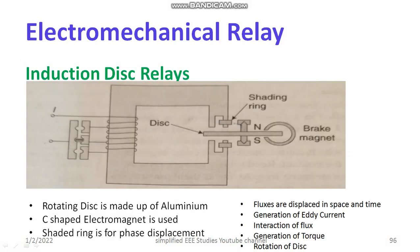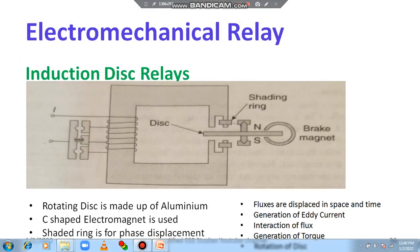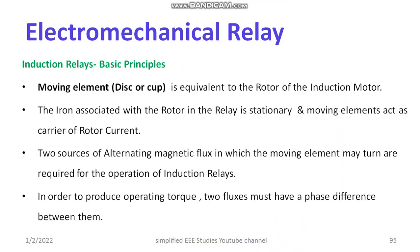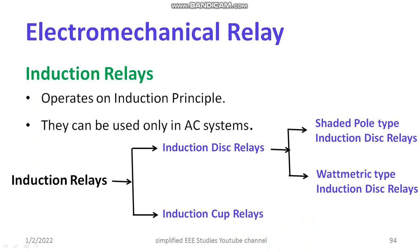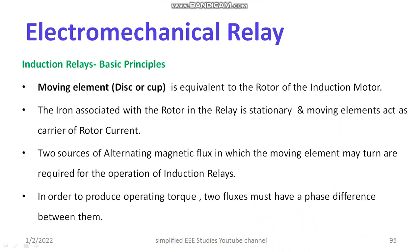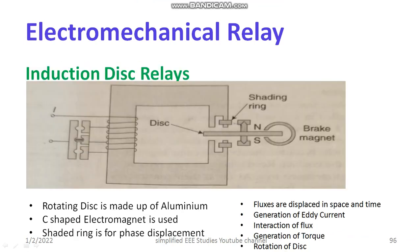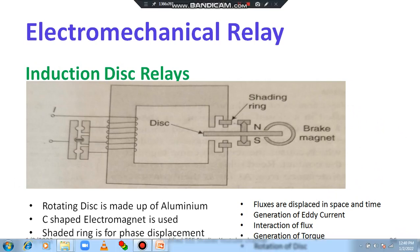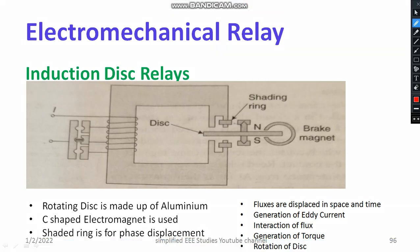Moving on to the induction disc relay — it is the first sub-classification. There are two types: shaded pole type and wattmetric type. I will discuss what is meant by induction disc relay. Let us go through the diagram. First of all, you can see there is a permanent magnet — this is your permanent magnet, number one.